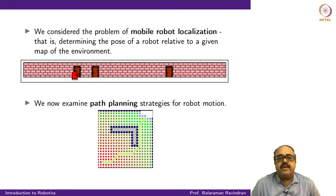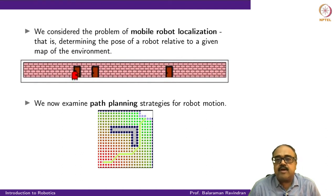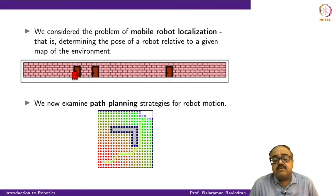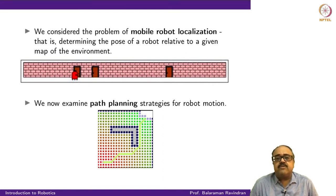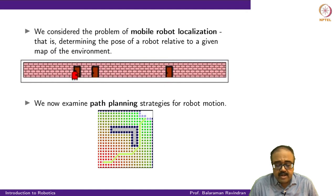Hello, everyone. So this week, so far, we considered the problem of mobile robot localization. We looked at the localization taxonomy. We also looked at Markov localization and we saw a little bit on how to do this localization given a feature-based map. Most of the algorithms are looking at grid-based maps. Now, for the next lecture, we are going to look at path planning strategies for robot motion.